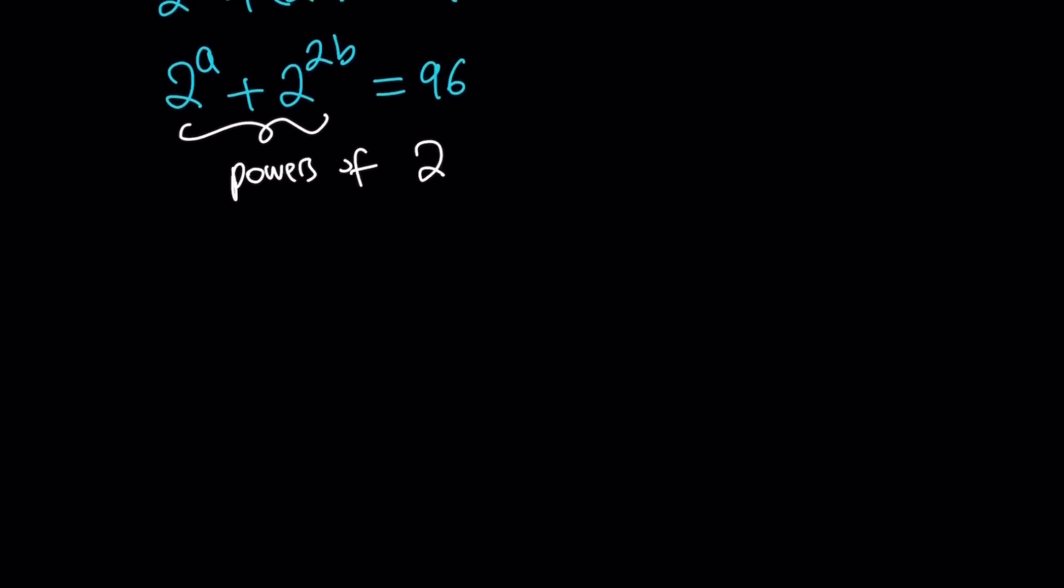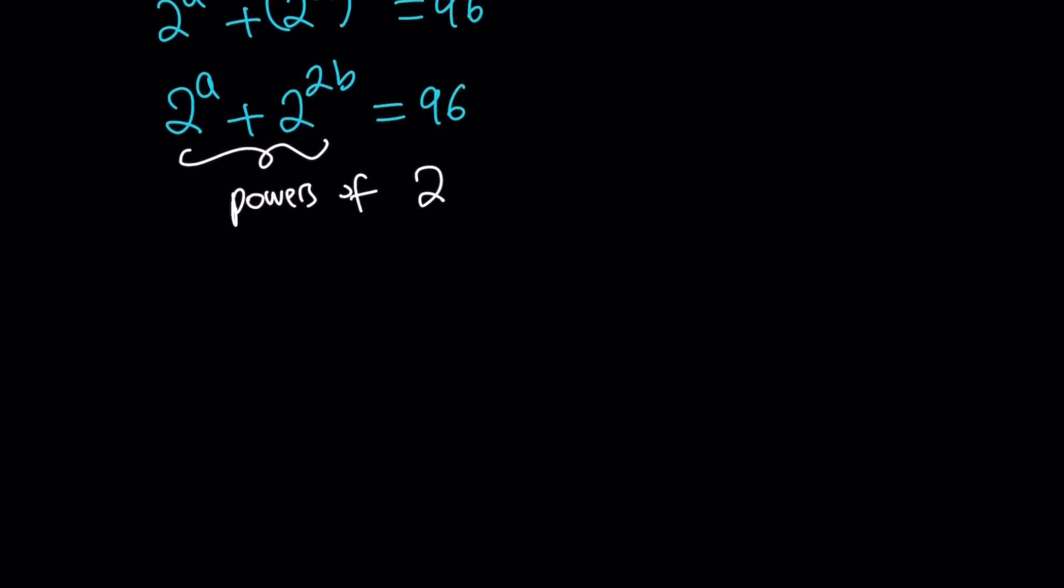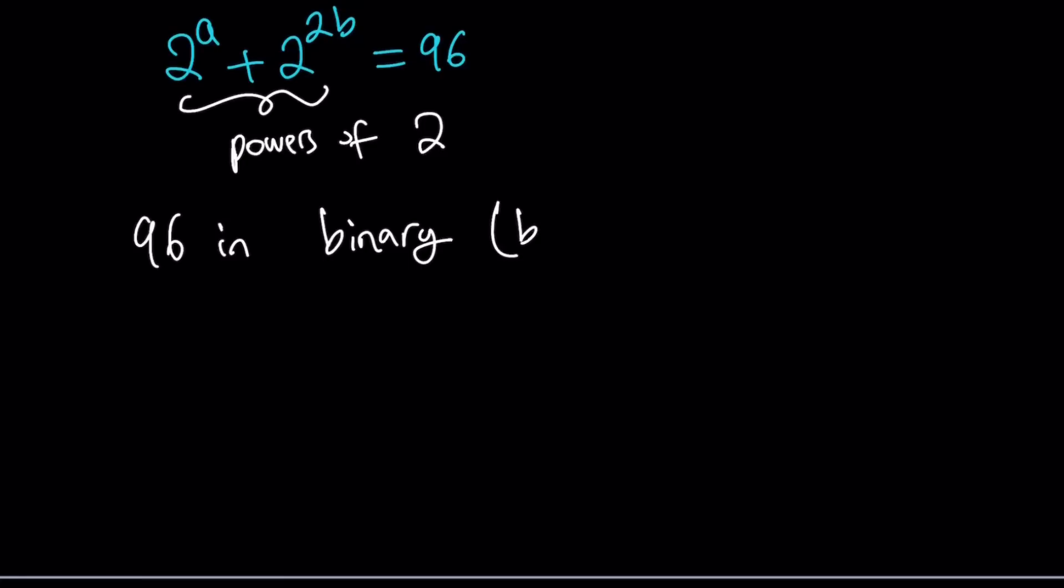And so I'm going to show you something that is going to give us a unique representation, which is called the binary representation. So if you write 96 in binary, that means base 2, you're going to get the following. You're going to get 2 ones and then 1, 2, 3, 4, 5 zeros. And this is going to be in base 2. And that is going to be our number 96.